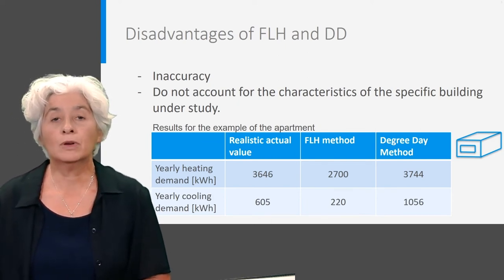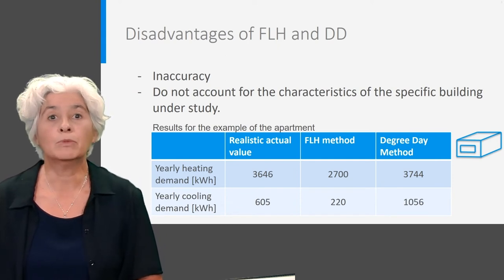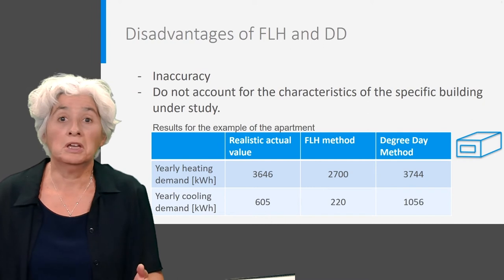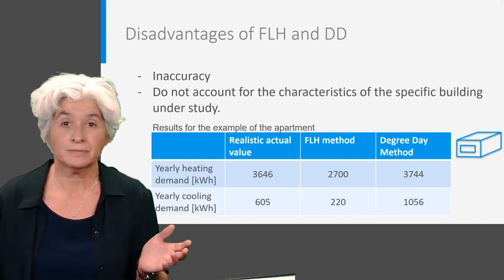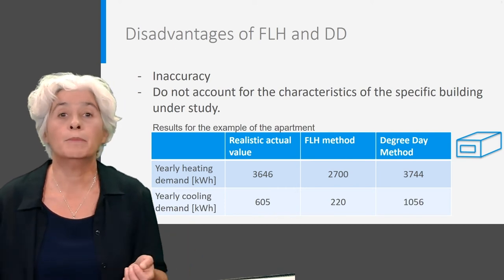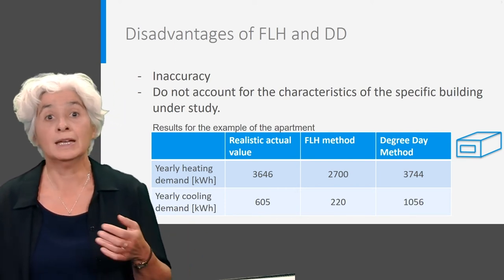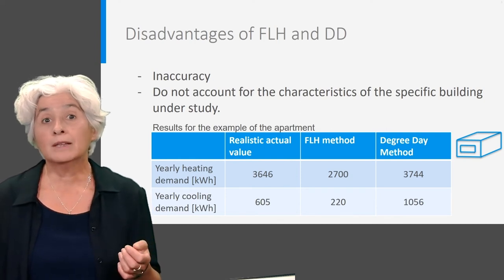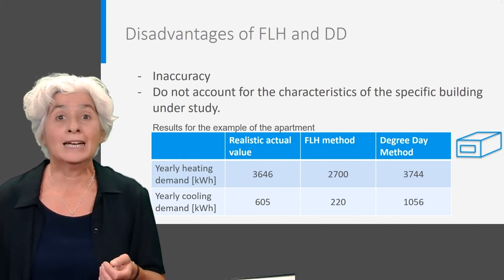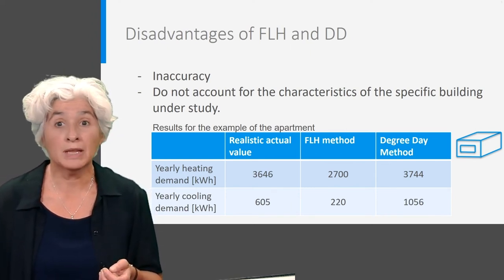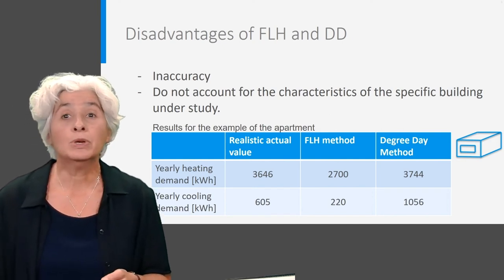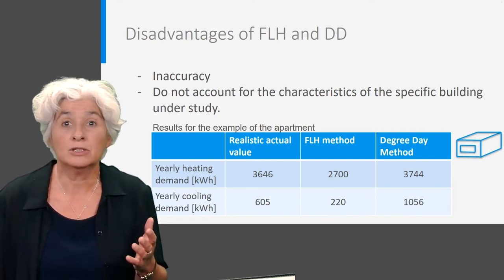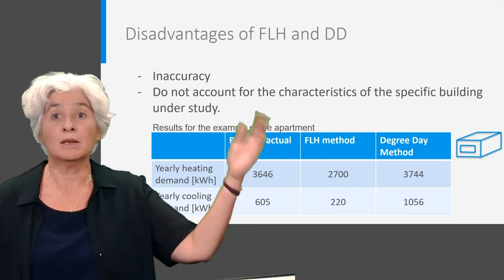In the table, you see the actual realistic energy demand of the apartment building we considered in the example, and the results by the full load hour method and the degree day method. The magnitude is okay, but there are very large errors. It is clear that we need a better method — one that could help us in choosing and sizing the right building components like window size or degree of insulation. These factors are very poorly reflected in full load hours and degree day methods, as their effect is solely accounted for in the determination of the nominal power, which deals with only one short moment in the year. So we know how the window size affects the power at this short moment, but we don't know how it affects it during the remaining part of the year.